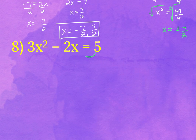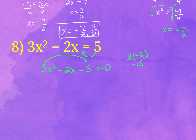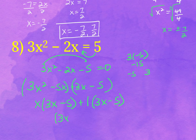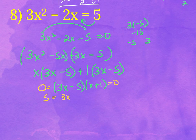For problem eight, move the 5 over to get 3x squared minus 2x minus 5 equals zero. First times last gives you negative 15. Factors of negative 15 that sum to negative 2 would be negative 5 and positive 3. Plug those in, then factor by grouping — take out an x from the first two terms. When you don't take anything out from the second group, it's a 1. You get 3x minus 5 and x plus 1. Split and solve: 3x equals 5, so x equals 5 thirds, and x equals negative 1.